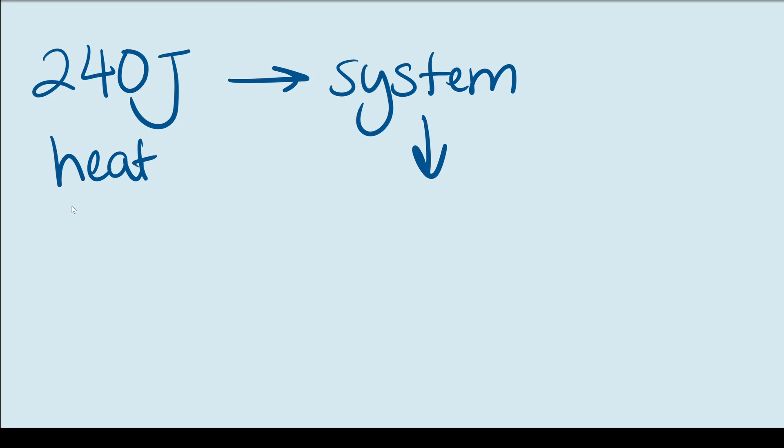Let's do another question. Let's say 240 joules of heat entered a system. And that system gave off 90 joules by doing work on the surroundings. What is the change in internal energy? Once again, take a few seconds and you can also pause the video if you would like.